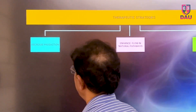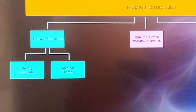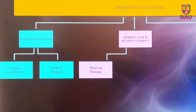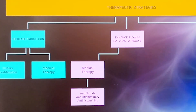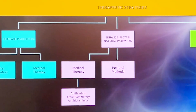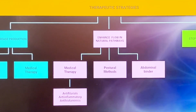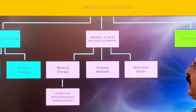The third strategy is that whatever is the site of leakage of chyle in the urinary system — either in the fornix, the pelvis, or the ureter — that leakage can somehow be stopped. In the first strategy of decreasing the production of chylomicrons, we will use dietary modifications and medical therapy. To enhance the flow through the natural pathways, we will see how medical therapy can help, including anti-filarials, anti-inflammatories, and anti-histaminics, as well as postural methods and abdominal binders.